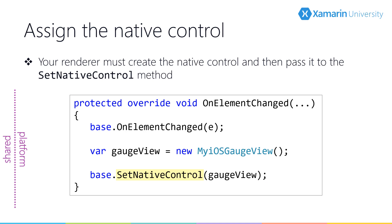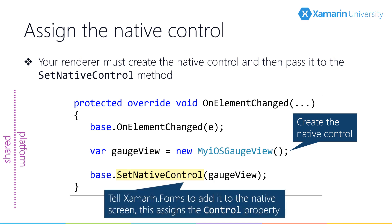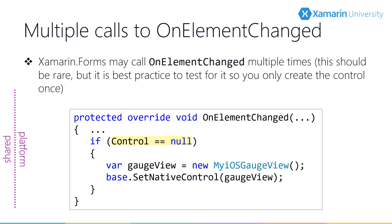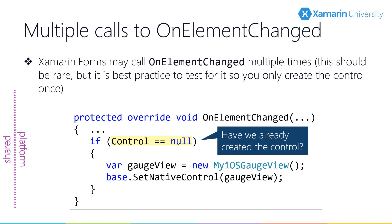We assign the renderer's native control in the OnElementChanged method. When deriving from ViewRenderer, we need to explicitly set the native control: first we instantiate the control, then we assign it using the SetNativeControl method. OnElementChanged is typically only called once; however, the Xamarin Forms team doesn't guarantee this because Xamarin Forms may reuse renderers in specific circumstances, such as when using a renderer for a list view cell. Because OnElementChanged may be called more than once, you should always guard against calling SetNativeControl multiple times by checking if the Control property is null first.